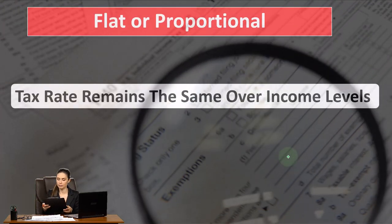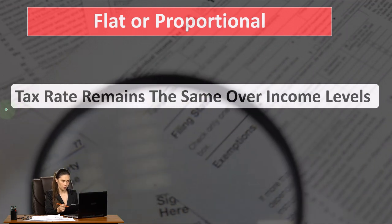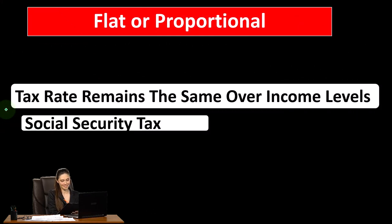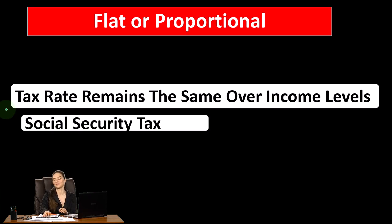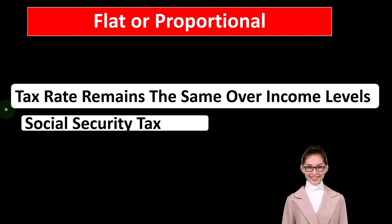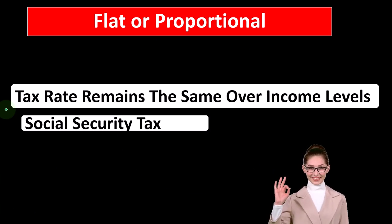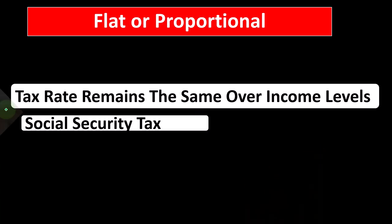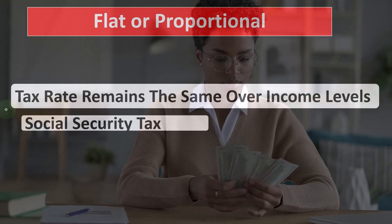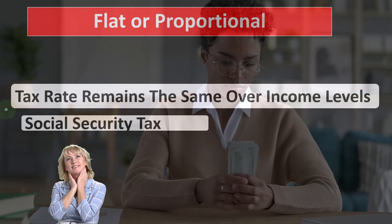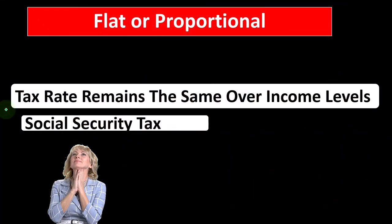A flat or proportional tax means the tax rate remains the same across income levels. Social Security is an example of a flat-type tax. If you apply a flat tax on an income tax system — say everyone pays 10% or 15% — if you earn $100,000 you're taxed at the same rate as someone earning $10,000, but you'll pay more because 10% of $100,000 is far more than 10% of $10,000.